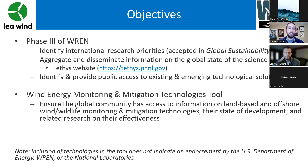Lastly, in this phase, we worked to identify and provide public access to existing and emerging technologies, and that's the focus of today. The partnership within Wren — the Pacific Northwest National Laboratory and the National Renewable Energy Laboratory — worked with Wren members and others to develop this tool to ensure the global community has access to information on land-based and offshore wind monitoring and mitigation technologies, their state of development, and any publicly available research that highlights the validation or effectiveness of these technologies.